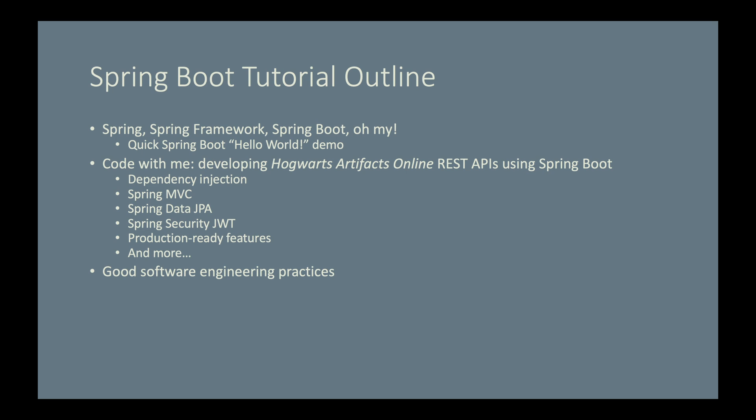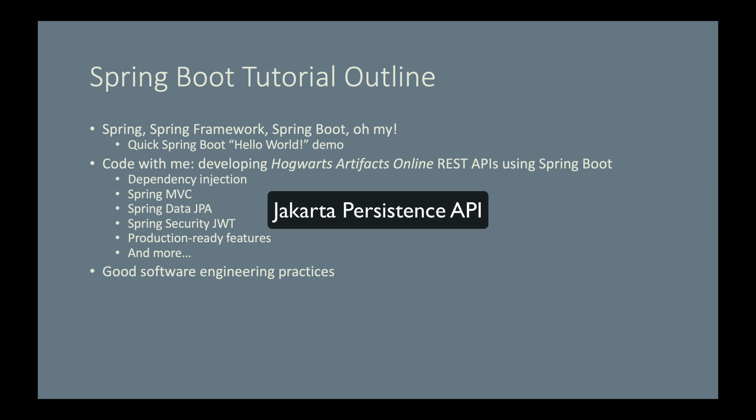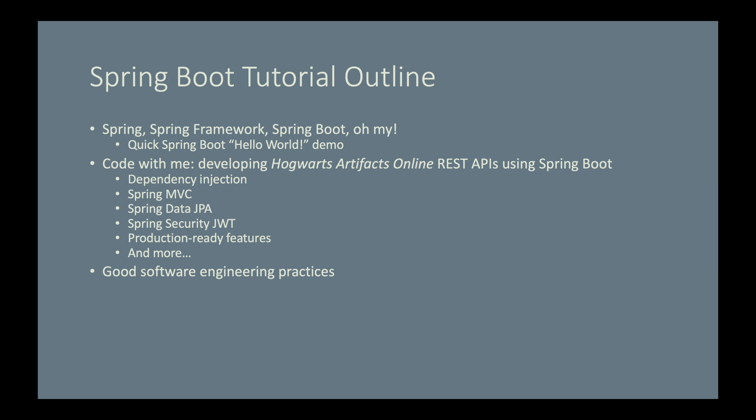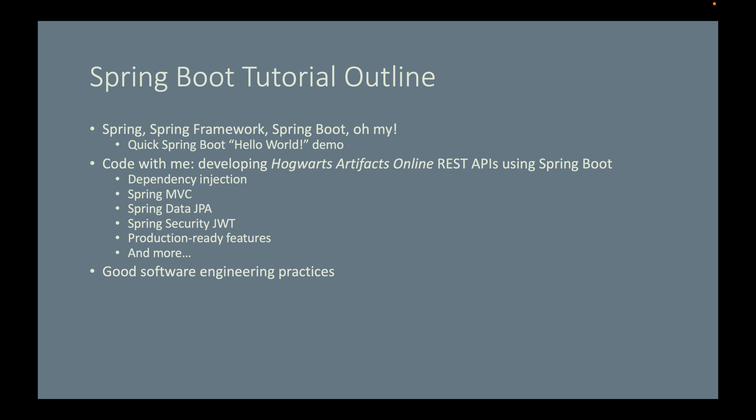You will see how data are persisted to a relational database using Spring Data JPA — JPA stands for Jakarta Persistence API. You will use Spring Security to authenticate users and prevent unauthorized access to an application. In particular, I will focus on JWT authentication and authorization — JWT stands for JSON Web Token.